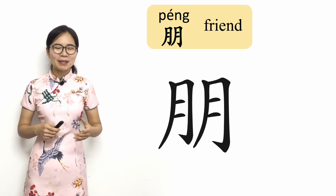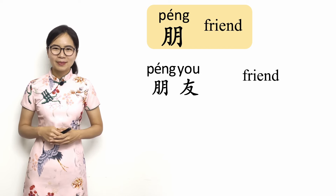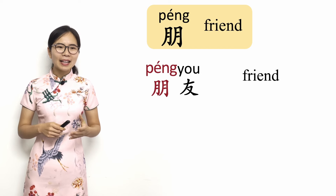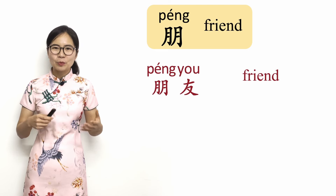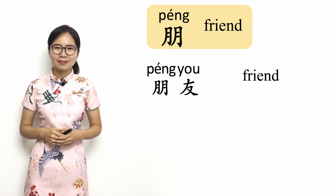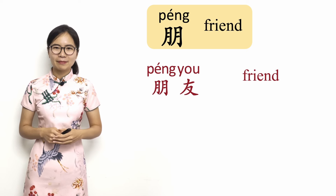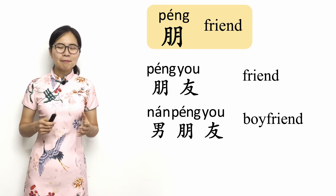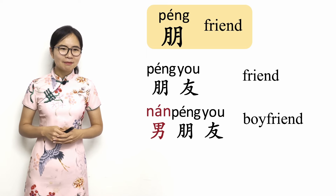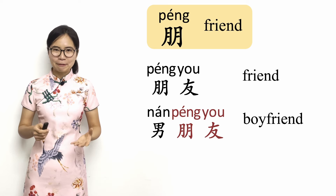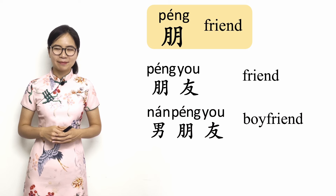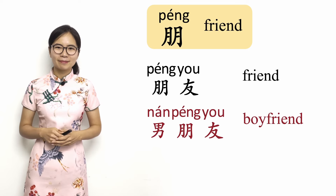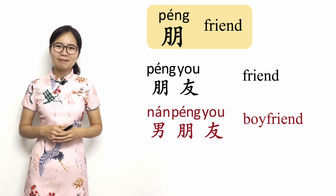Here are some example words. The characters 朋 and 友 both mean friend, and together 朋友 is the Chinese word for friend. 朋友, friend. Next, 男朋友. 男 means male and 朋友 means friend. Together, 男朋友 means boyfriend. 男朋友, boyfriend.